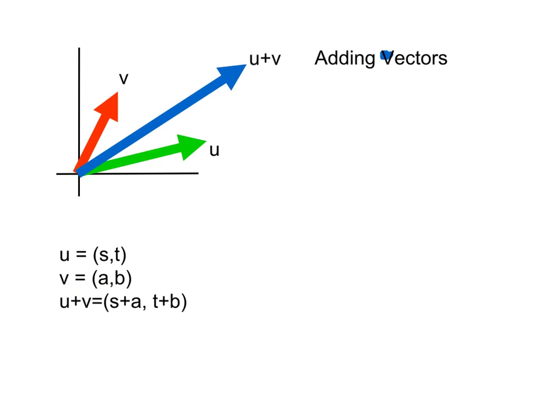...and the coordinates of v a and b, then the sum would just be s plus a and t plus b, or the coordinates would be s plus a and t plus b. So why does that work? All right, so let's take a closer look at this.